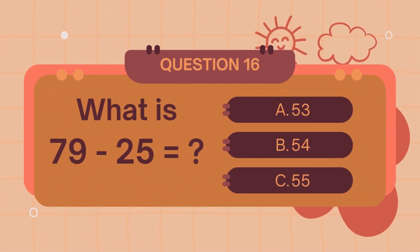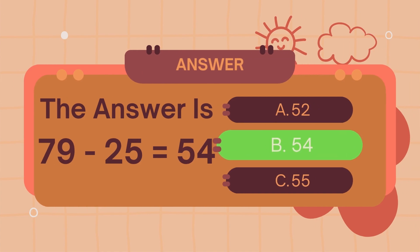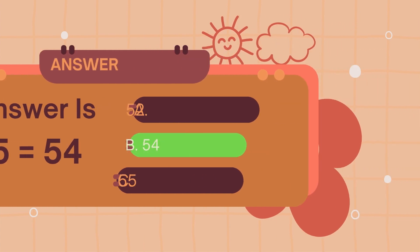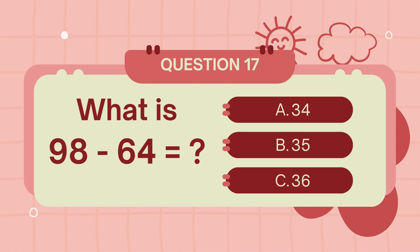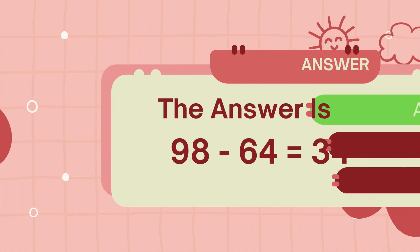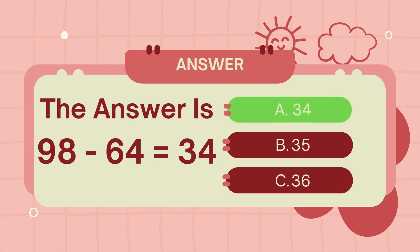What is 79 minus 25? The answer is 54. What is 98 minus 64? The answer is 34.